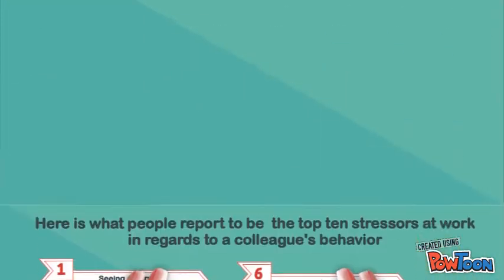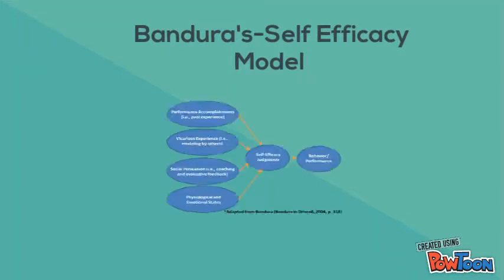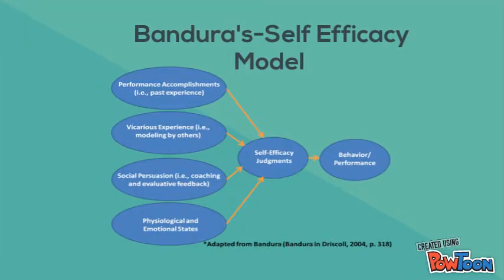There are four principal sources of self-efficacy according to Bandura: past performance, modeling behavior, feedback from others, and physiological responses. This leads to self-efficacy, which affects our behavior and performance.